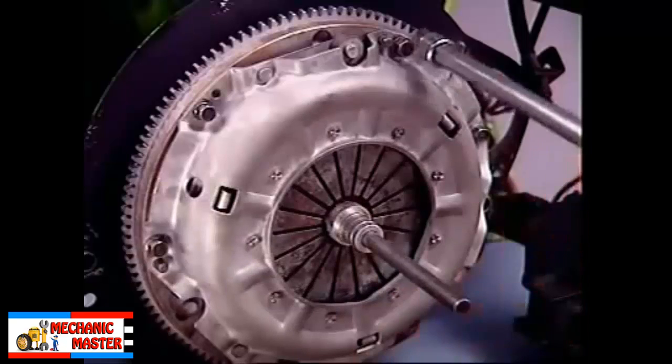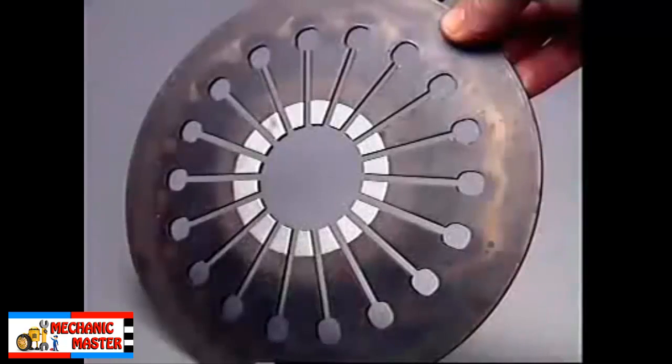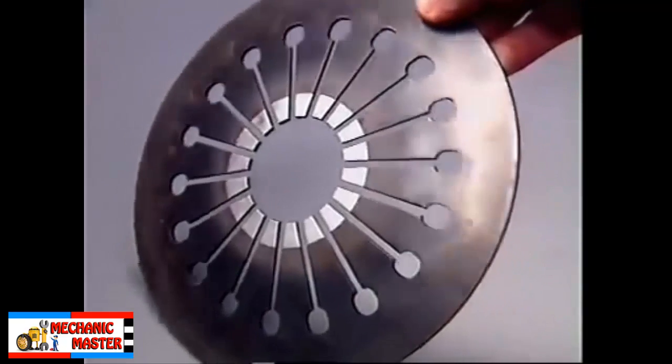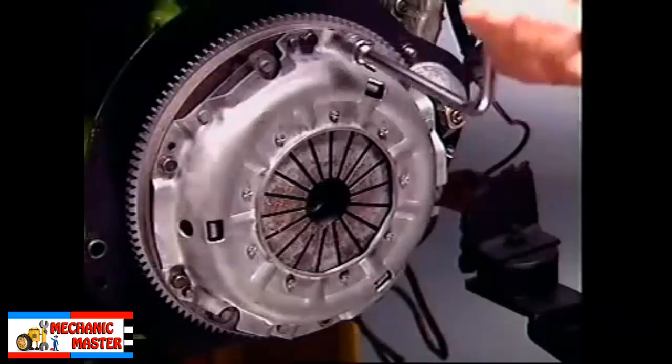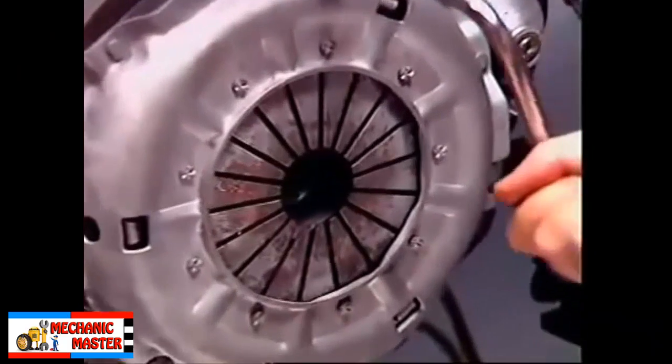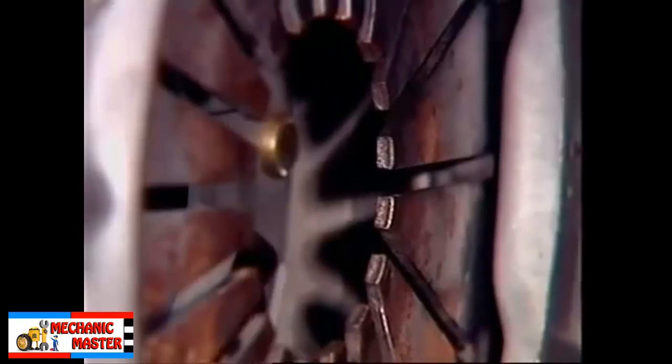The clamping force on the friction facings is provided by the diaphragm spring. Unloaded, it is a dished shape. As the pressure plate cover tightens, it pivots on its fulcrum rings and flattens out to exert a force on the pressure plate and the facings.